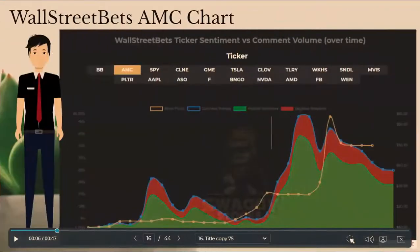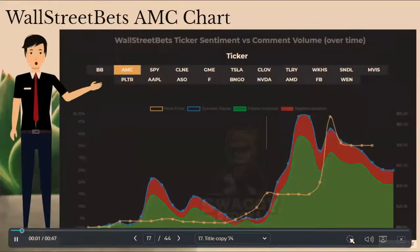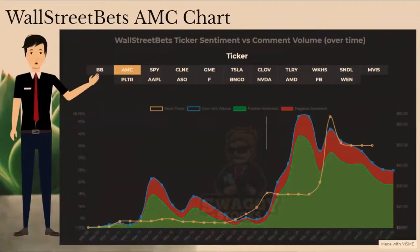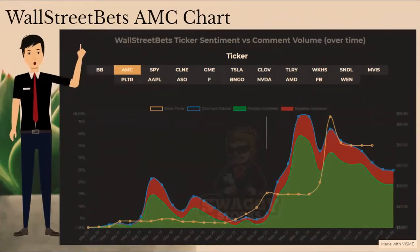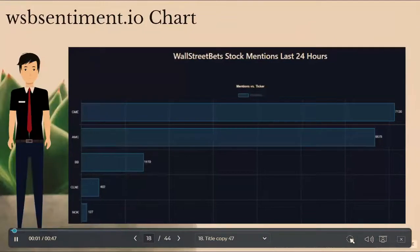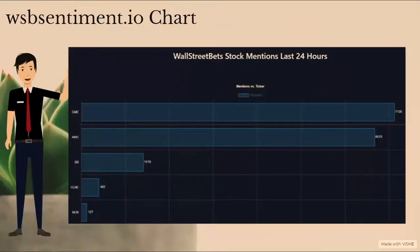This chart shows the Wall Street Bets sentiment for AMC versus comment volume over time. While there doesn't appear to be a clear correlation between these two metrics, we see overall sentiment for AMC declining from its peak. Whether that affects the stock price up or down remains to be seen. Also, this chart shows Wall Street Bets stock mentions in the past 24 hours. As we can see here, GME overtook AMC as the most mentioned stock, but AMC is still highly mentioned at a close second place.